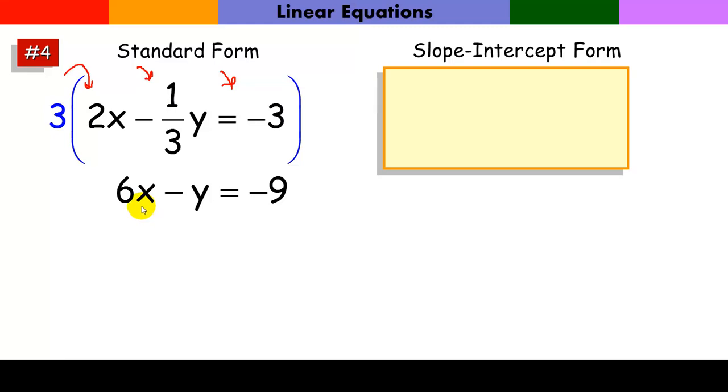And I want to get y alone. I subtract the variable term 6x from both sides. I'm going to move my constant over. And now y is not alone. It has a coefficient of negative 1. I'm going to divide every term by negative 1. So basically I have y equals 6x plus 9.